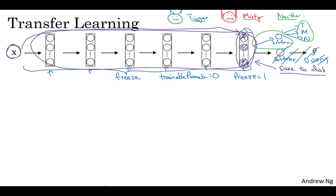So the advantage of the save to disk or the pre-compute method is that you don't need to recompute those activations every time you take an epoch or take a pass through a training set. So this is what you do if you have a pretty small training set for your task.